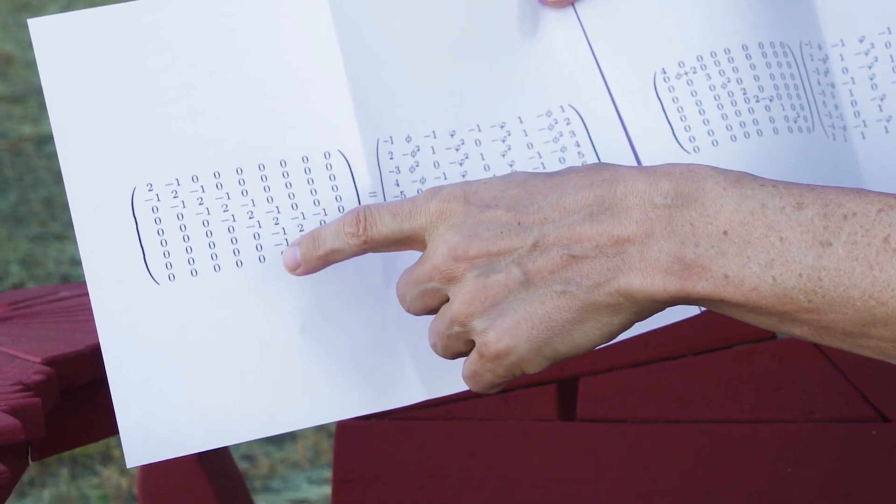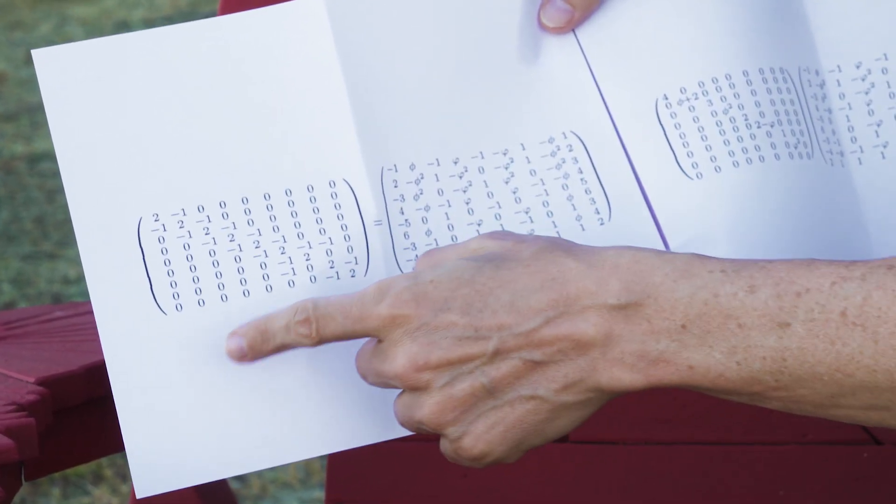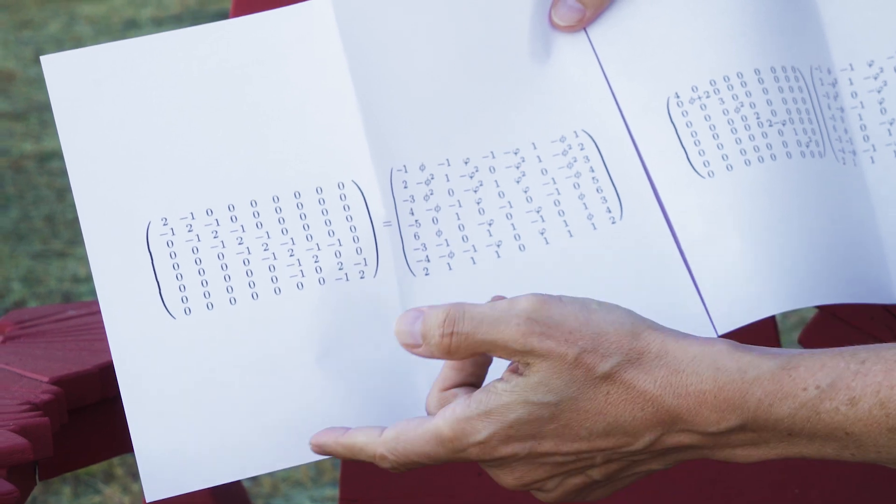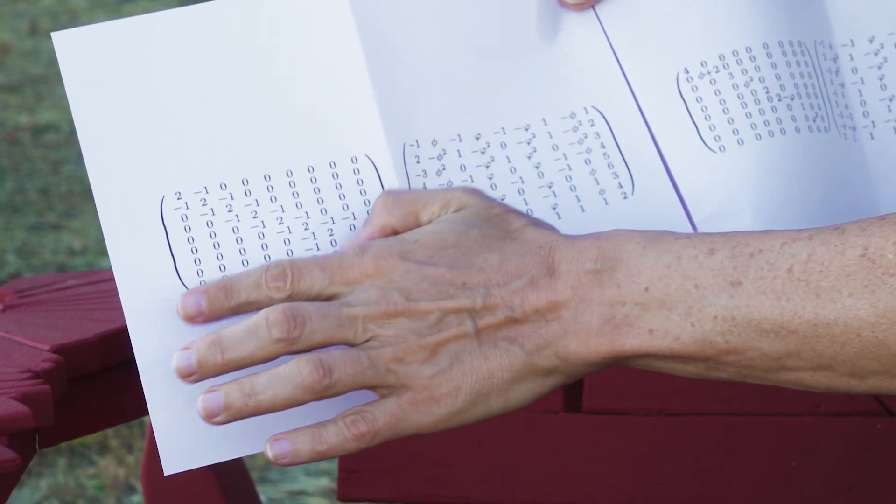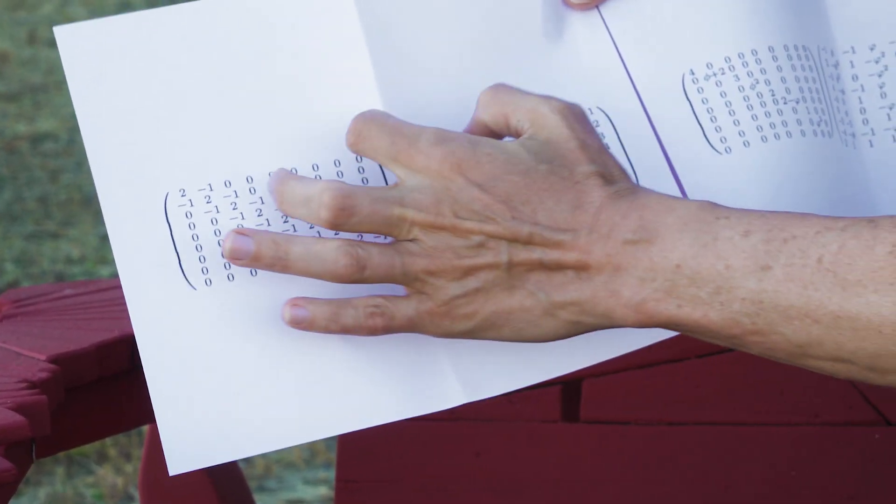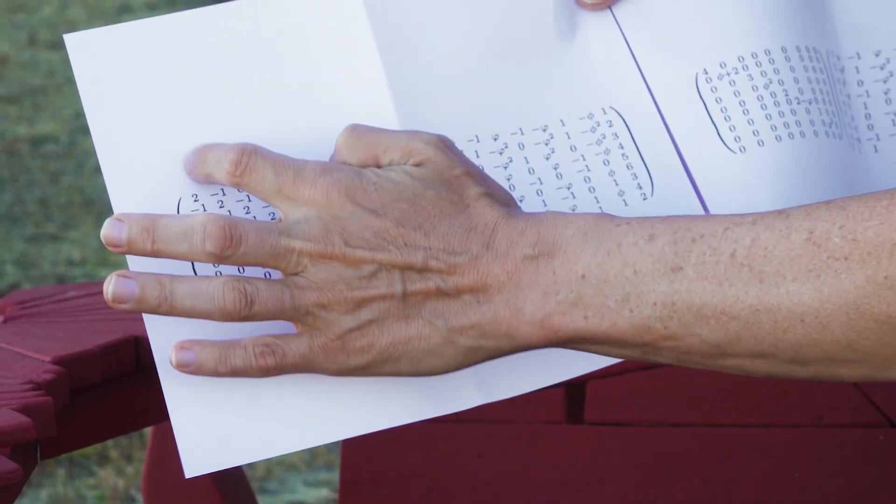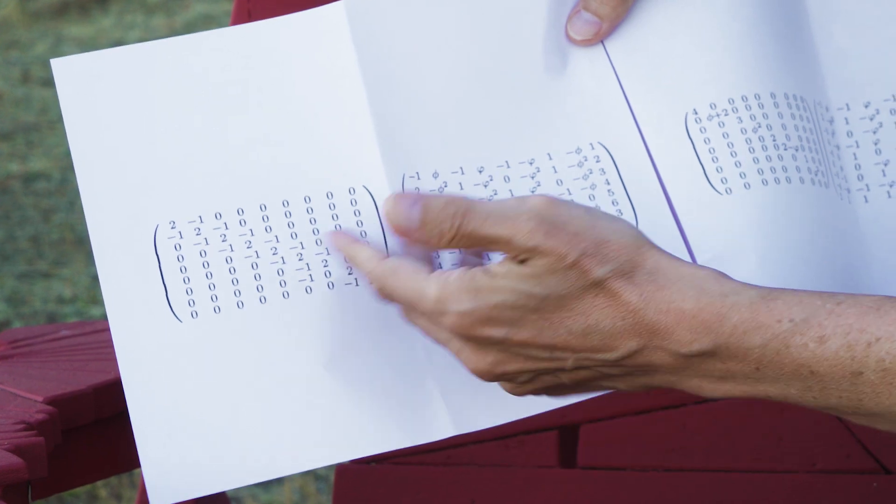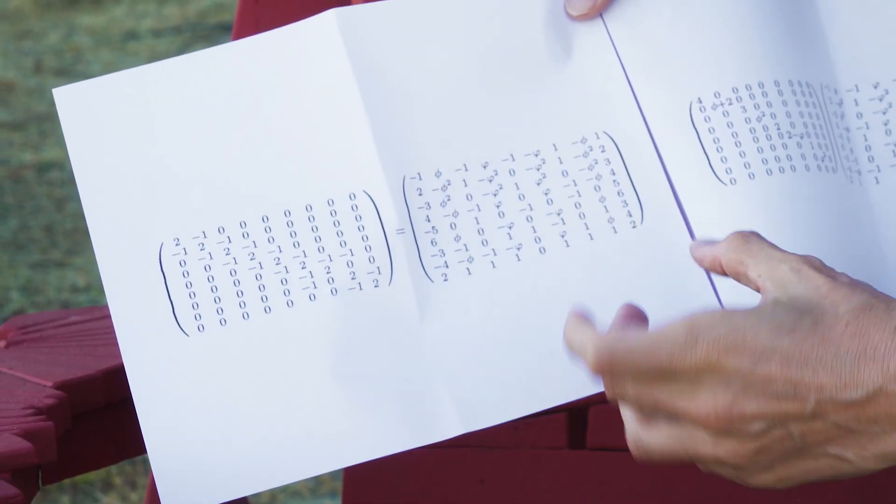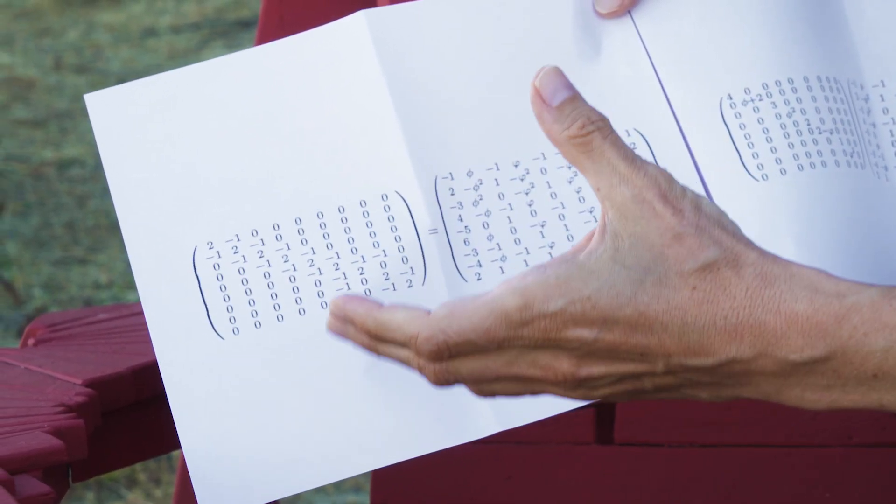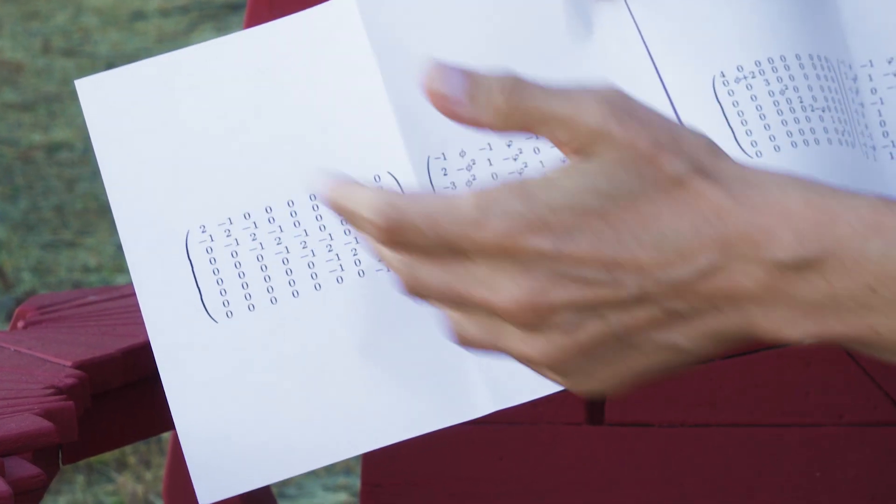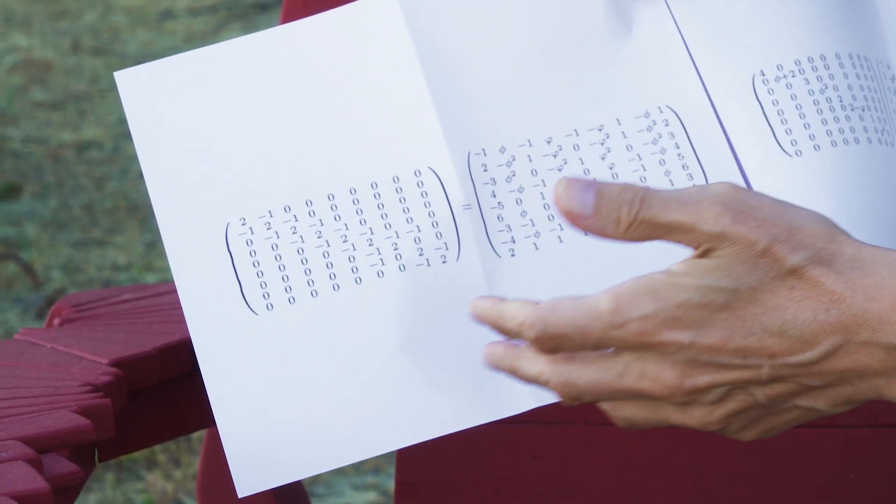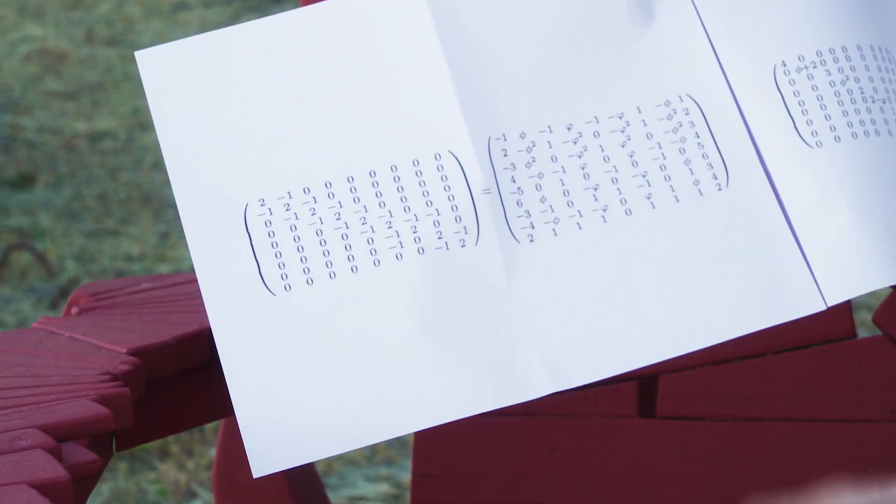And in fact, this is a Cartan matrix of an affine Lie algebra which is not E8 but E9. And you recognize E8 if you remove the first column and the first line. But here this is E9 because E8 is the Gosset polytope but E9 is the infinite E8 lattice which is what we project to do our quasicrystals.